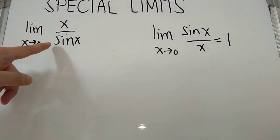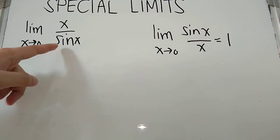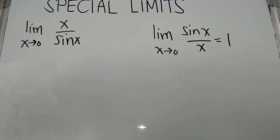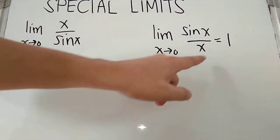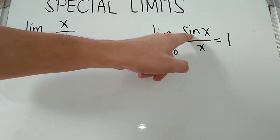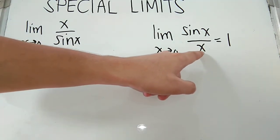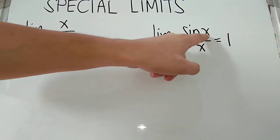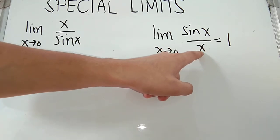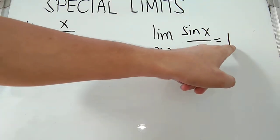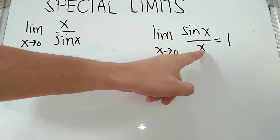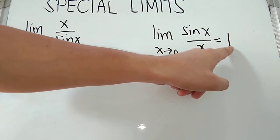From our given problem, we have a sine trigonometric function, so we will be basing on this special limit theorem. Our goal is to have the same function. If we have a function x inside sine, then our denominator should also have x. If we have 3x inside sine, then we should have 3x on the denominator to have a limit value of 1. If the argument inside sine is 5x, then we should have 5x on the denominator.